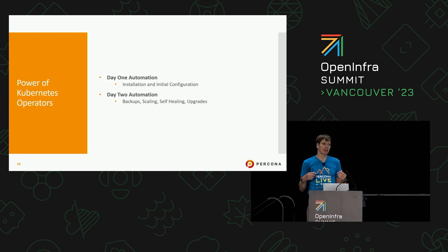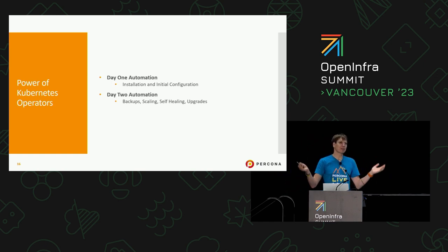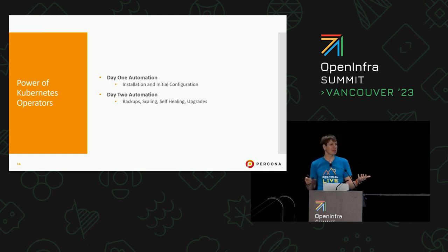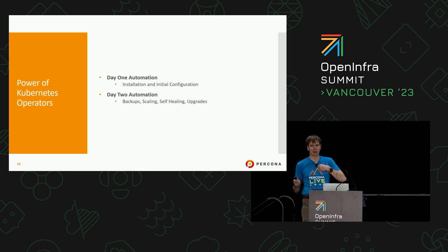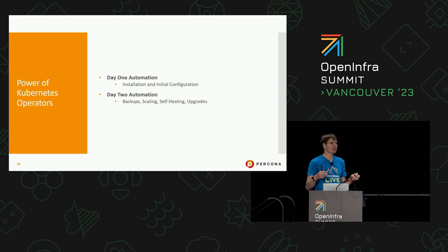In the early days of Kubernetes, many people used Helm for database automation. Getting a database deployed with Helm is fine if you're using it for CI/CD, because CI/CD databases can always be recreated from scratch. But production databases spend probably 99.9% of their life in day two.